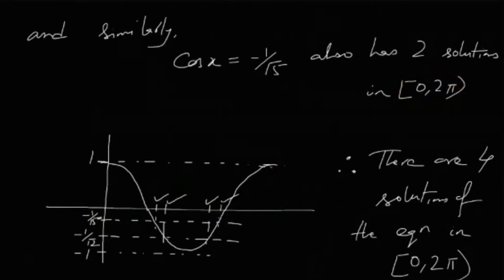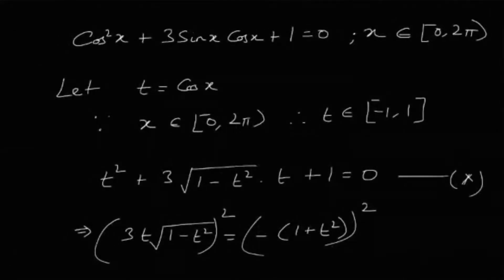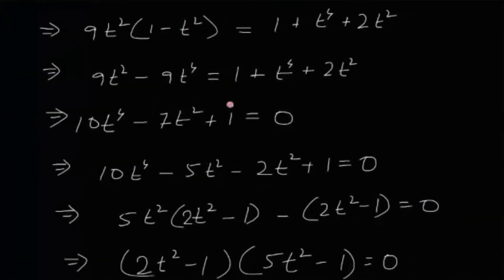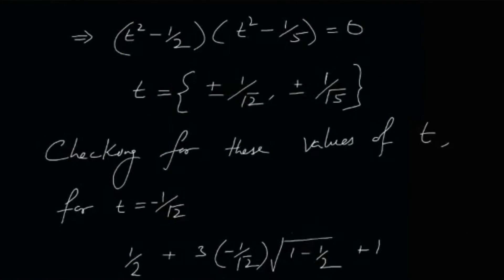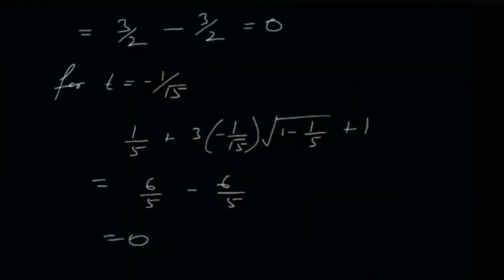Therefore there are four solutions to this problem. It's actually a pretty easy problem — the key is not to rush and assume the answer is four just from the t-solutions. You need to check for extraneous solutions. All you really need is a substitution and solving an easy quadratic. Hope you liked it — see you next time!